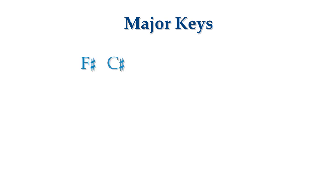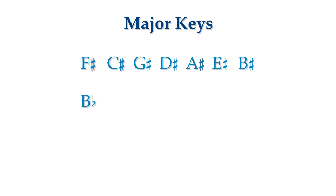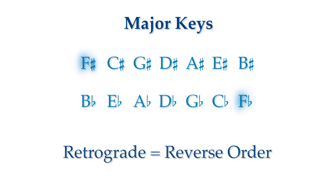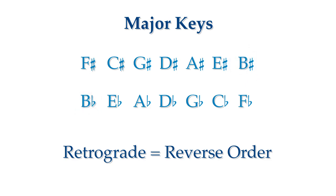The order of the sharps is F, C, G, D, A, E, B. And the order of the flats is B, E, A, D, G, C, F. Notice also that the order of the sharps and flats are exactly backwards to each other — or retrograde, as we musicians say.